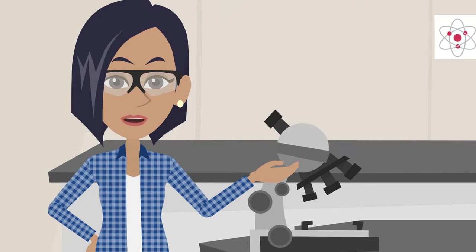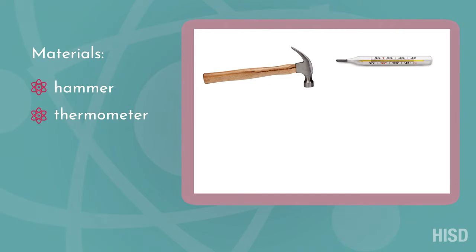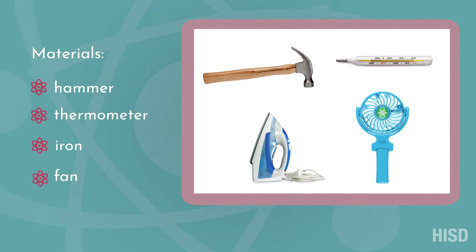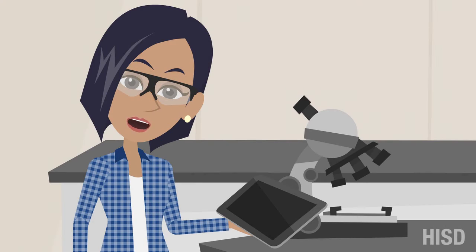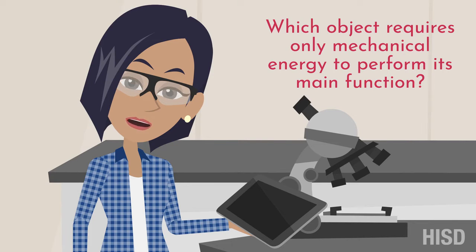For our investigation, students will need the following materials: hammer, thermometer, iron, and fan. Students will be asked to determine which object requires only mechanical energy to perform its main function. Now let's watch as we discover just what objects utilize mechanical energy.